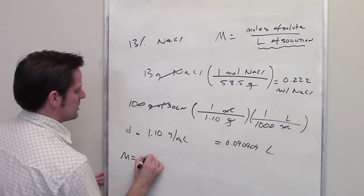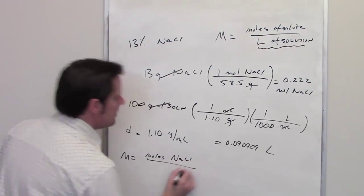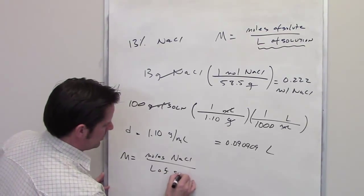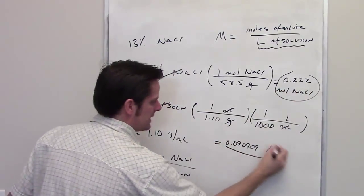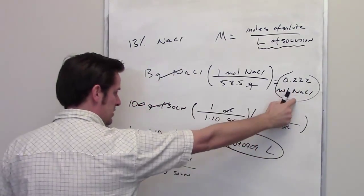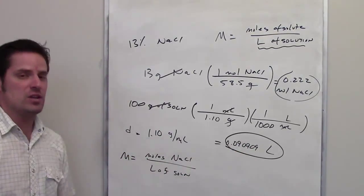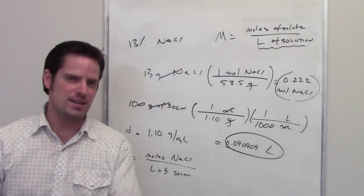Now, molarity is equal to moles of solute, in this case sodium chloride, divided by total liters of solution. I've got my moles of solute right there. I've got my liters of solution right there. So you take this number, put it on top, this number on bottom, and you get your final molarity, which is the correct answer to this question.